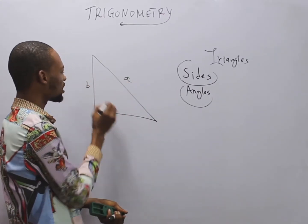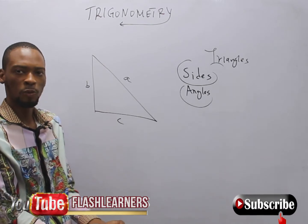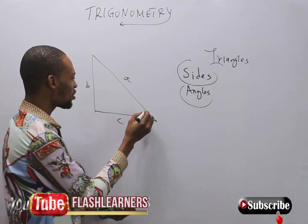If this is A, B and C, these are the sides of a triangle. Now the angles are here.